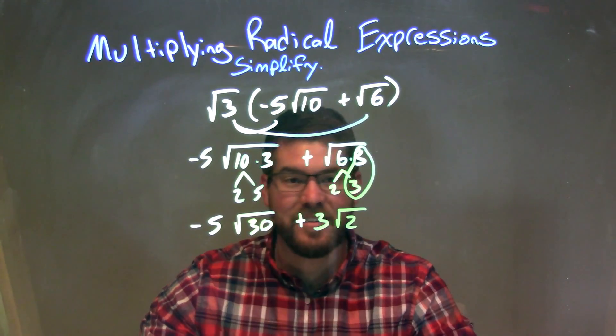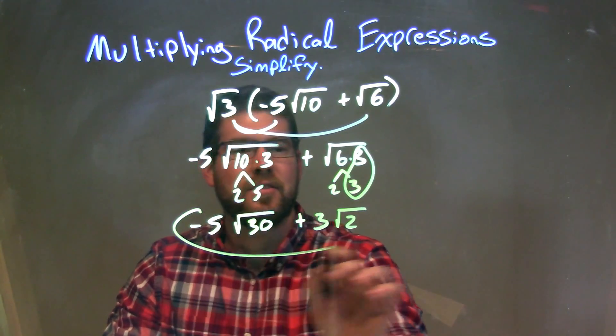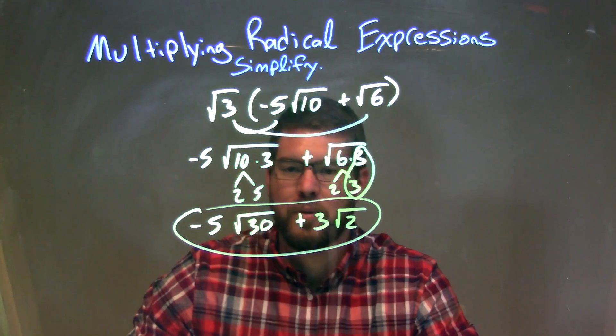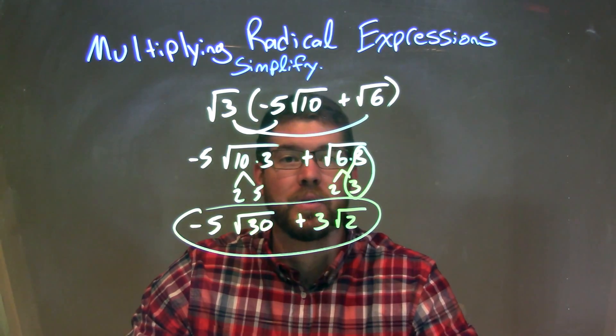And that's actually it. Since I can't simplify this anymore, this is my final answer here. Negative 5 times the square root of 30 plus 3 times the square root of 2.